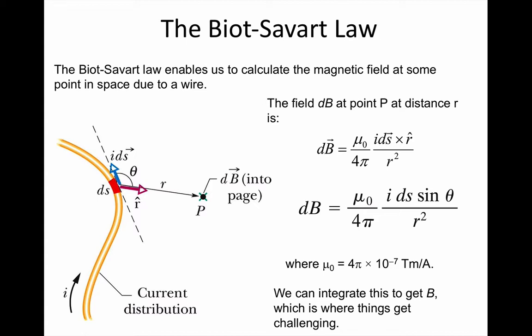Now you notice that includes the cross product between two vectors. So we can put that into the slightly simpler form below. So now the magnitude of the field is dB which equals μ₀ over 4π times the current I times the length of that little segment ds over r² times sin θ where θ is the angle between the direction of the current at that point and the vector pointing from that element of wire to the point P.